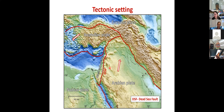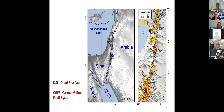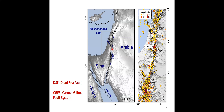Zooming into our study area, you can see the different sections of the Dead Sea Fault: the Aravah Valley, the Dead Sea Basin, the Jordan Valley, and Jordan Gorge. You can also see a major intra-plate structure within the Sinai Plate — the Carmel-Gilboa Fault system — with the Carmel Fault next to the Mediterranean and the Gilboa Fault next to the Dead Sea Fault. In a minute we'll see what role these faults play.